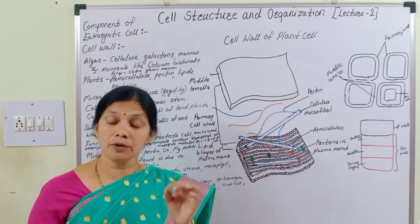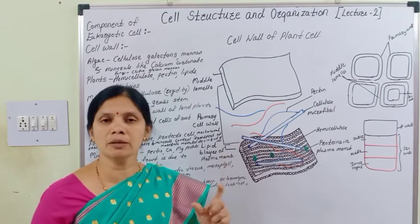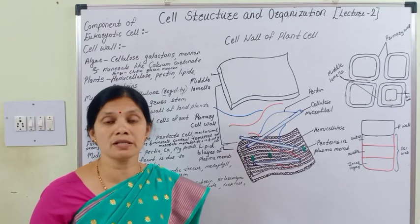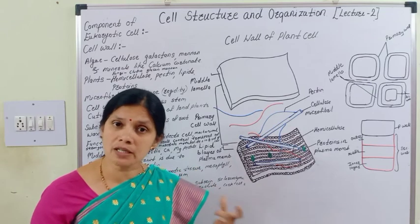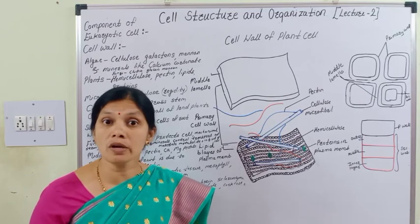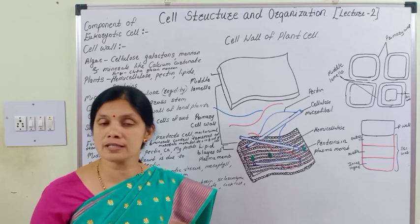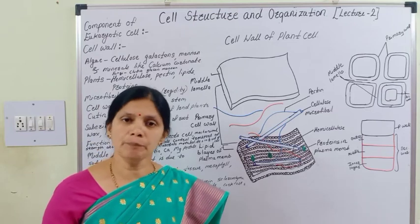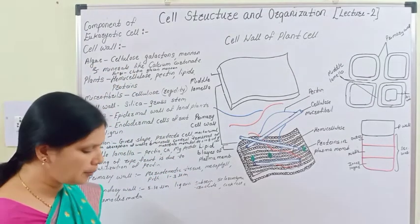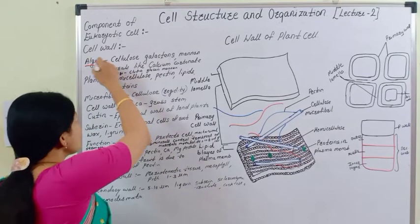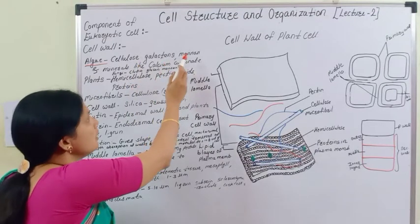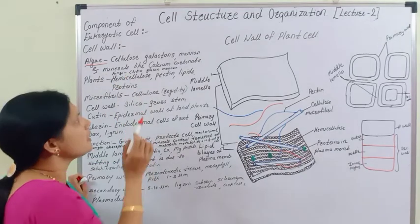Also in bacteria, if you observe the bacterial cell wall, the cell wall is present in bacteria as well. Then, if you observe in algae, the cell wall is formed from cellulose, galactans, manans, and minerals like calcium carbonate.